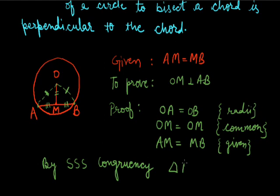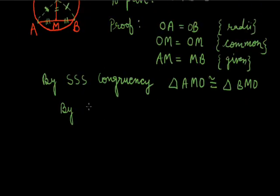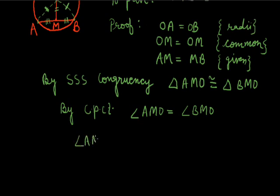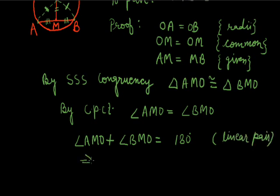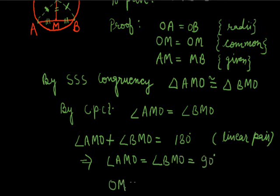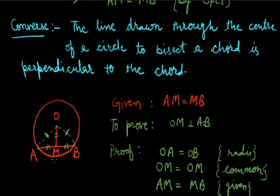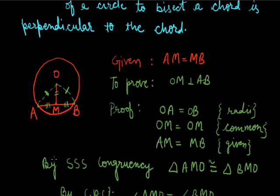By SSS congruency, triangle AMO is congruent to triangle BMO. By CPCT, angle AMO is equal to angle BMO. But both angles form a linear pair, so angle AMO plus angle BMO equals 180 degrees. Since both angles are equal, each angle is 90 degrees. Hence OM is perpendicular to AB. This is the proof of the converse of the theorem: the line drawn through the center of a circle to bisect a chord is perpendicular to the chord.